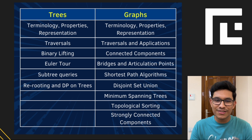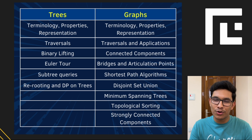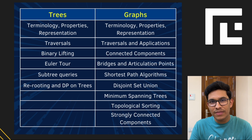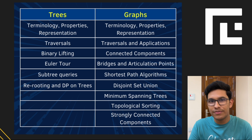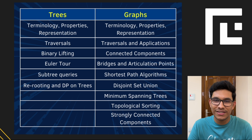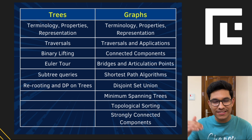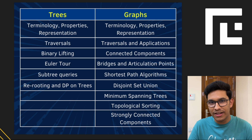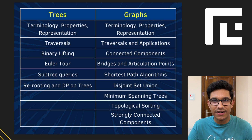After shortest path algorithms, we'll look at the famous concept of disjoint set union. Once we complete that, it will also help us in learning about minimum spanning trees, especially Kruskal's algorithm. Beyond that, we'll look at directed graphs and their algorithms — cycle detection in a directed graph, topological sorting, and strongly connected components. We'll start from scratch, gradually build up, increase the difficulty, and then look at very advanced concepts that will help you tackle even Codeforces 1800 and 1900 level problems.